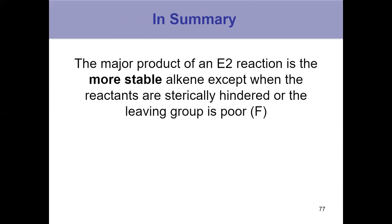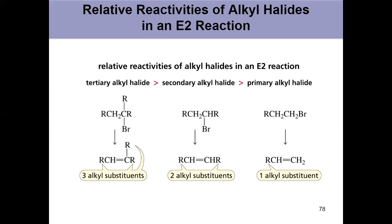That's stated here on this summary slide. For relative reactivities of E2 reactions: tertiary alkyl halides are more reactive than secondary, which are more reactive than primary, because they lead to a higher substituted alkene. Tertiary alkyl halides give the most substituted, most stable product, followed by secondary, followed by primary. So those are lots of factors to pay attention to for E2 reactions: know how to predict the alkene product, know the mechanism, know Zaitsev's rule and the three exceptions. In our next video, part five, we'll talk about E1 reactions and how they're a little bit different.